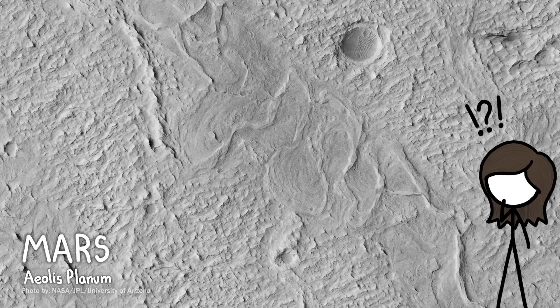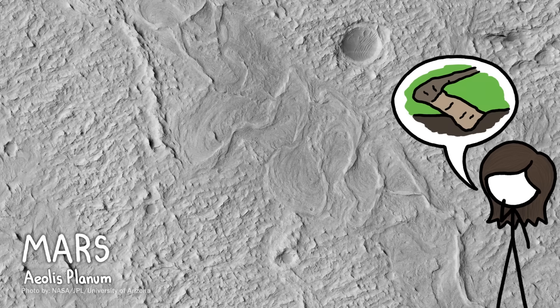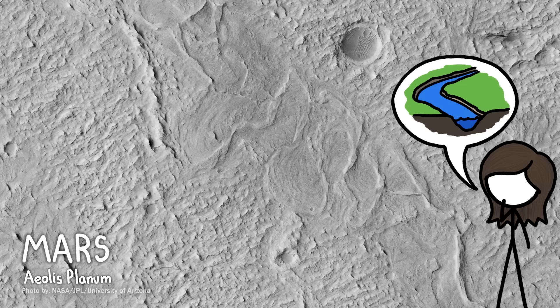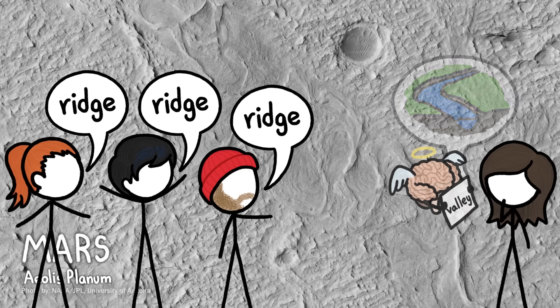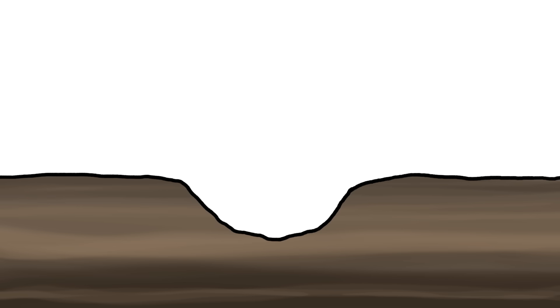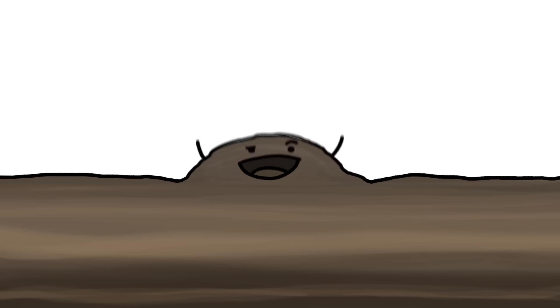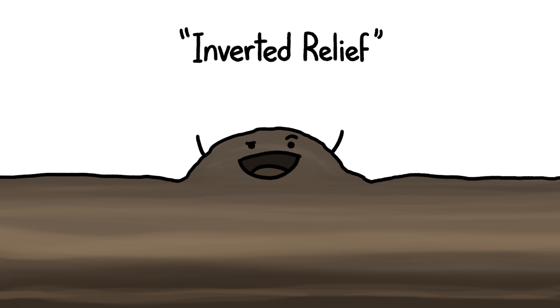But that can't be right, right? I mean, river channels should obviously be valleys since they've been carved into the ground. This seems like such a basic fact to me that even when everyone else on my team said they saw this as a ridge, my brain kept telling me it was a valley. It turns out that not only was my brain lying to me, but this stream channel is an example of a really weird geological process that essentially turns landscapes inside out, creating inverted relief.